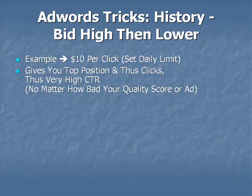Once things start happening, Google is going to look at your ad performance and start establishing a quality score. So if you set your bid high from the very beginning, you'll get top position. Now, a side note: normally you do not want the first position on the Google page, because when you are in the first or second position you are going to get clicks that are not relevant — clicks from people who are just surfing around and clicking on the first thing they see.